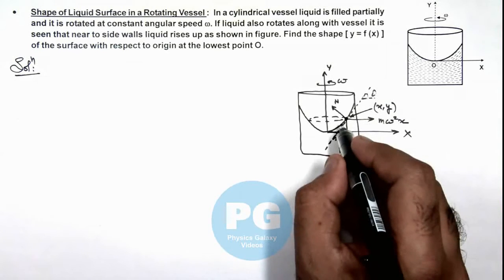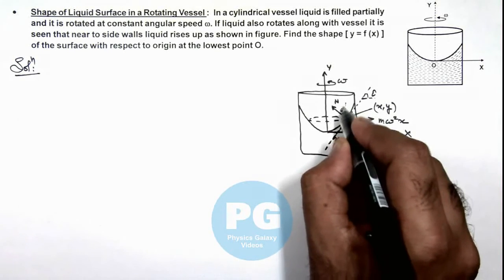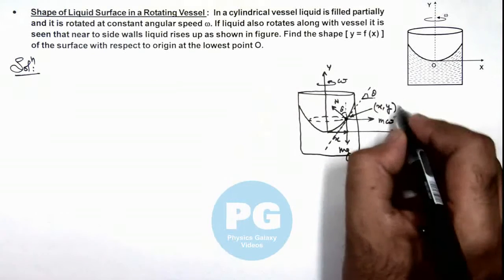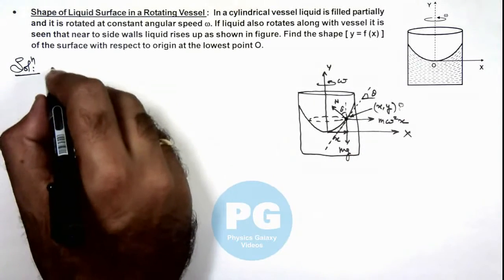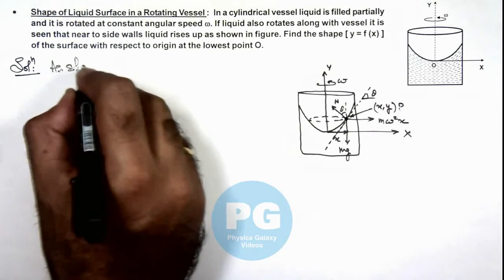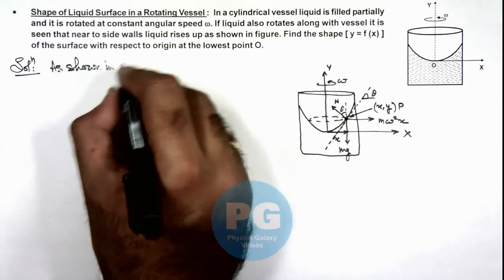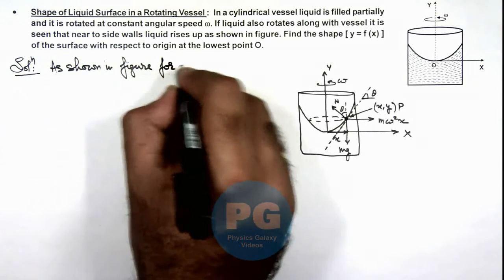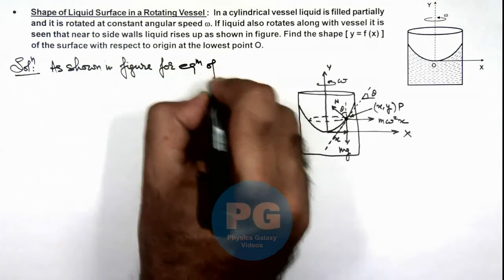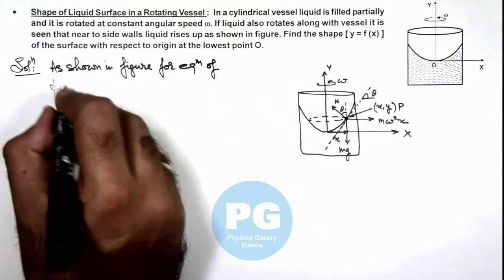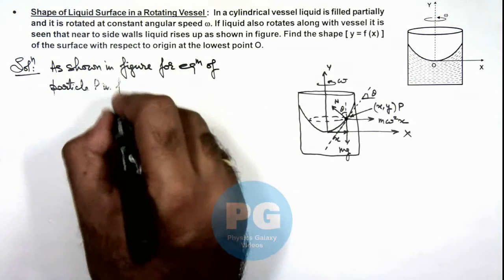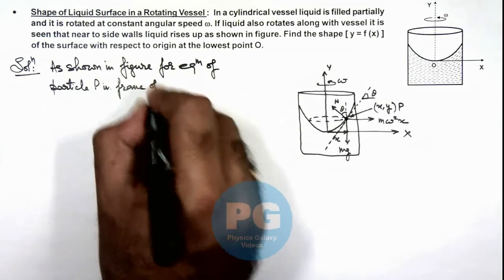Here we can see with the vertical, normal reaction is also making an angle theta. And we can write, if this particle is P as shown in figure, for equilibrium of particle P in frame of container.